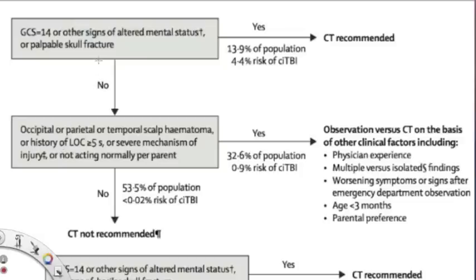Okay, so now let's go over the rule. First, for those kids who are less than 2 years of age. So remember, if the kid had a moderate mechanism, and they had a GCS of 14, or other signs of altered mental status, or palpable skull fracture, if that's true, then yes, do a CT. The risk of a clinically important traumatic brain injury is 4.4%, or maybe like 1 in 23 kids are going to have some serious injury.